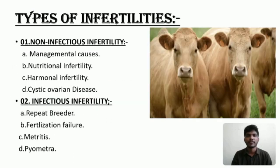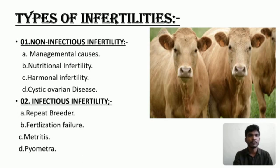Types of infertilities: non-infectious infertility and infectious infertility. Under non-infectious infertility: repeat breeder, fertilization failure, metritis, and pyometra. Metritis means it is the inflammation of the uterus, and pyometra means a serious and threatening infection in the uterus.